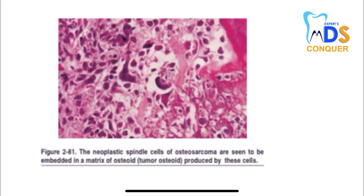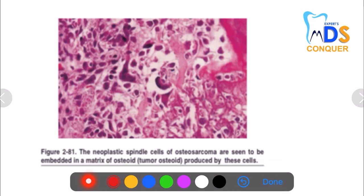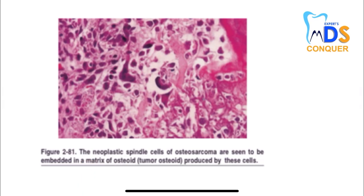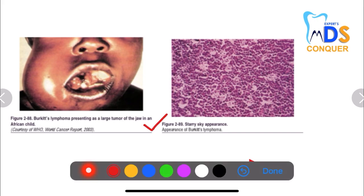Next, here there are neoplastic spindle cells of osteosarcoma embedded in the matrix of osteoid — the tumor matrix produced by these cells. You can see numerous neoplastic spindle cells embedded in the osteoid matrix. And again, a unique feature: the starry sky appearance is seen with Burkitt's lymphoma.